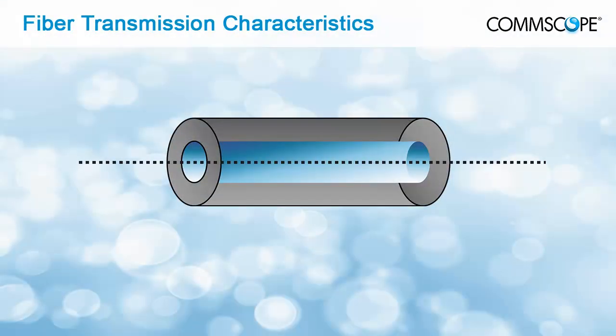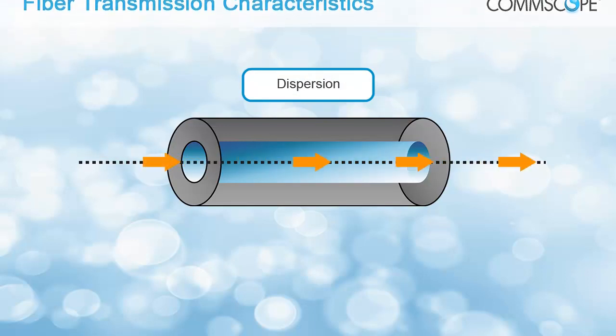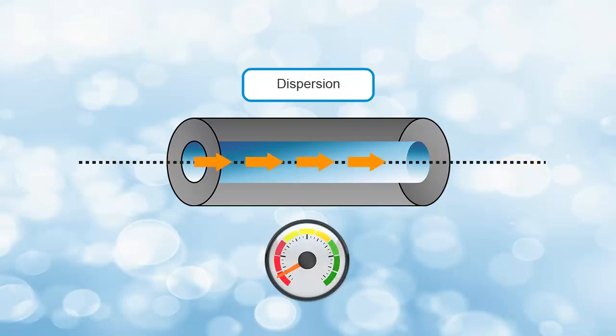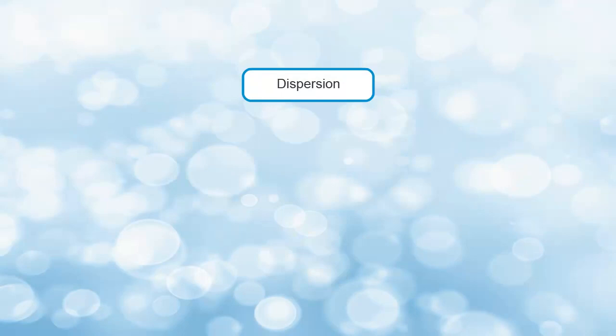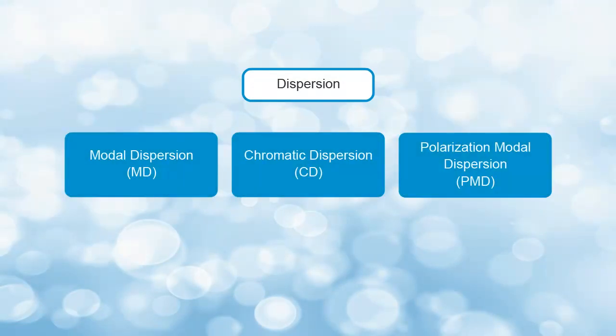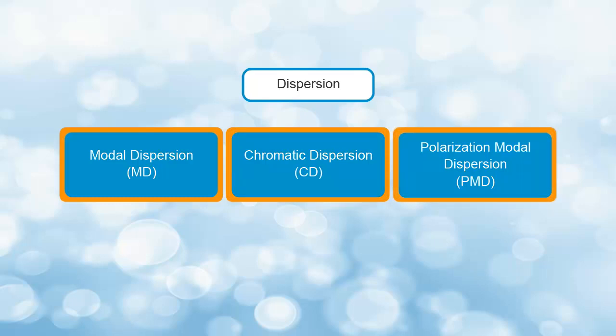Another factor that affects the signal during transmission is dispersion which reduces the effective bandwidth available for transmission. Three main types of dispersion exist: Modal dispersion (MD), chromatic dispersion (CD), and polarization mode dispersion (PMD).